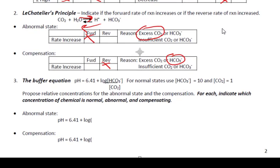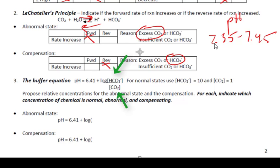And finally, the buffer equation. The normal pH range for human blood is 7.35 to 7.45. We are going to assume a pKa of 6.41 and a 10 to 1 ratio between the bicarbonate and the CO2 to maintain normal pH. If you substitute 10 in the numerator and 1 in the denominator, that produces 10, and the log of 10 is 1. Adding 1 to 6.41 gives 7.41, which is in the middle of the normal range.